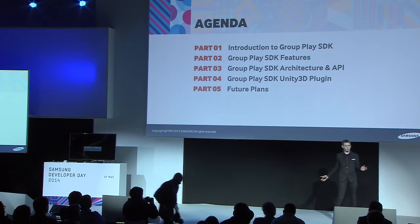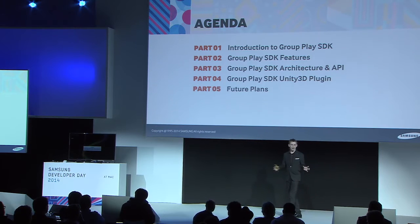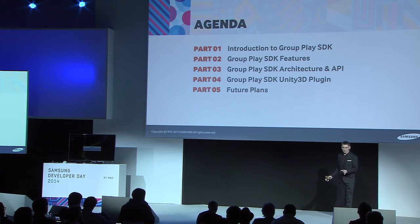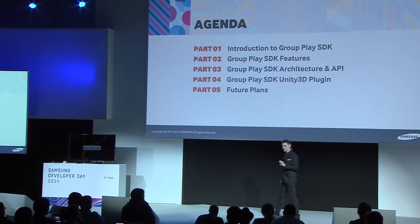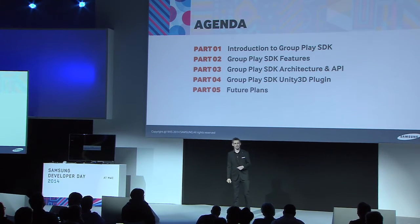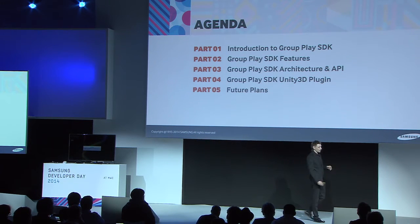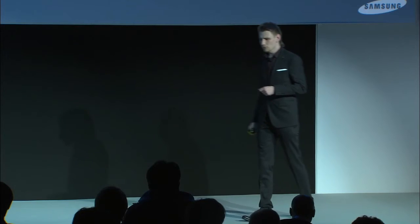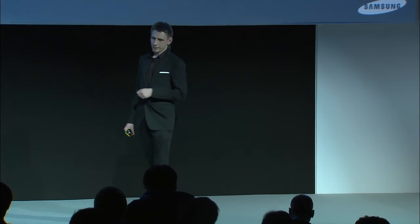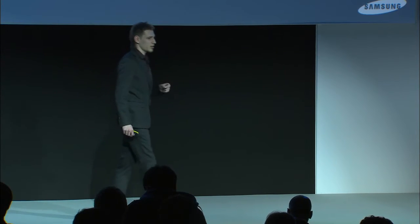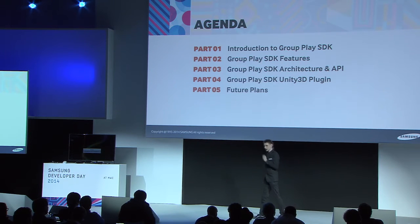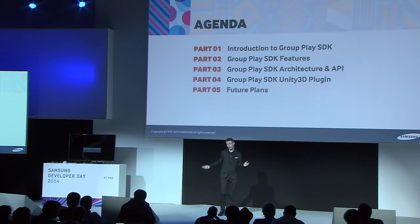My presentation will be divided into five parts. At the beginning, I'd like to give a little overview about the Group ASDK for those that have not yet heard anything about it. Then I will move to the SDK topic — feature overviews, some talk about the architecture and API, and then the cherry on top: the Unity 3D game engine plugin that we've developed. At the end, I'd like to raise the temperature a little by reviewing our future plans for the Group ASDK.